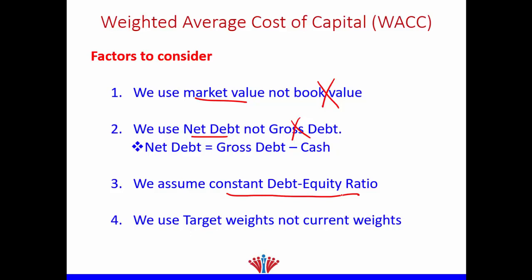The last factor we need to take into account is we use the target weights, not the current weights. For example, if a company is now in the growth phase and I would like to use WACC at maturity phase, I'm not going to use the current weights, but I will use what the target weights of this firm will be at maturity phase after two, three, or five years. Therefore, we use target weights, not current weights.